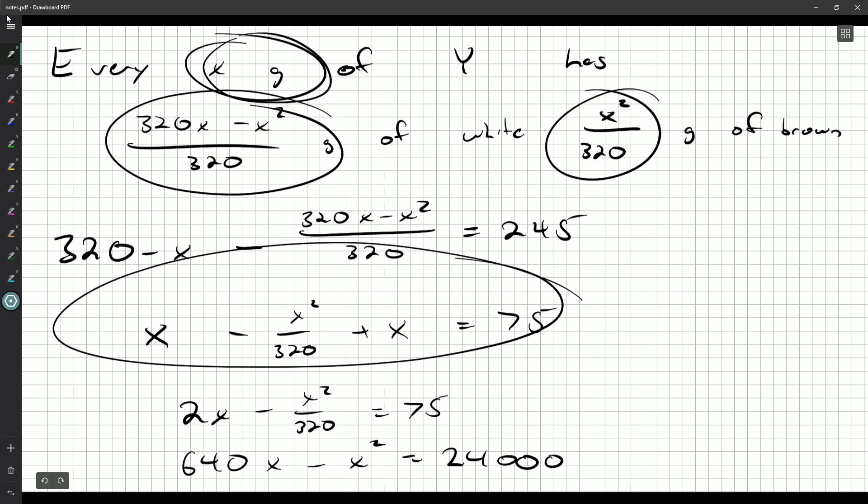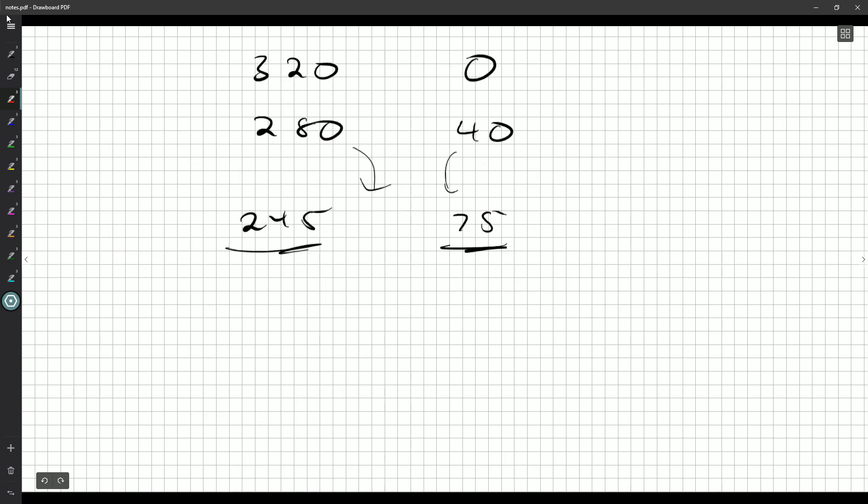Quick check for that. We know X equals 40 will solve this equation, but does it solve this one? So, really quickly, that would be 280. 320 times 40 minus 40 squared would be 11,200. Divide that by 320, that would be 35. And wouldn't you know it? 280 minus 35 is 245. So, we're even more confident in our X now.